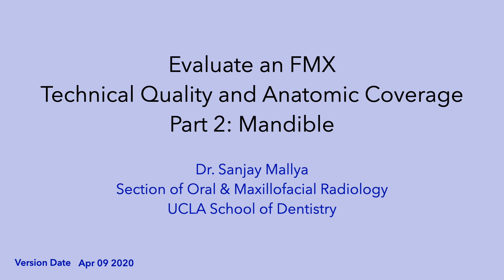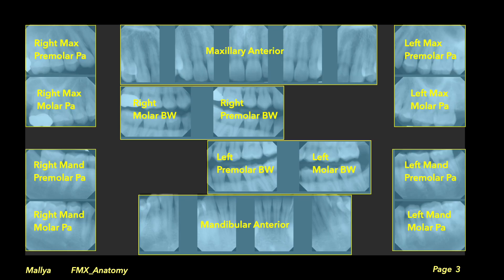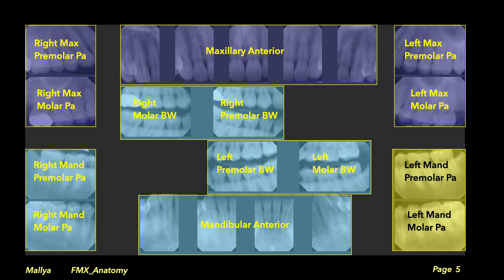This module will evaluate the anatomy of the mandible as viewed on a full mouth radiographic examination. You should be familiar with the layout of an FMX that we use at UCLA, and with the locations of the periapical and bitewing radiographs from the various anatomic sites. In the previous module, we carefully identified the teeth and systematically evaluated the maxillary anatomy.